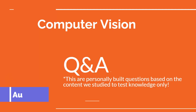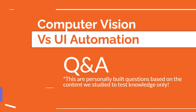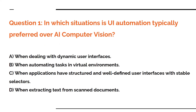Dear friends, welcome back to Automate with Rakesh. Let's go through some of the questions around computer vision versus UI automation. Let's see some of the questions here. The very first question: in which situation is UI automation typically preferred over AI computer vision?